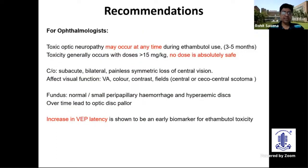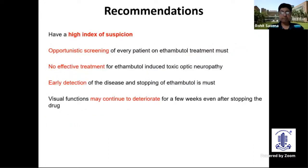What are our recommendations? Toxic optic neuropathy can occur anytime during ethambutol use, most commonly in the first three to five months. Although it's usually seen in higher doses, no dose is absolutely safe. It presents with subacute bilateral visual loss, but it could be asymmetrical. Fundus may more often be normal, but over time lead to disc pallor, and increased latency in the VEP is an early biomarker according to most studies. A very high index of suspicion is needed because the patient often does not think you need to know about his systemic problems or the treatment he is receiving, and almost everybody wants to hide tuberculosis. As an ophthalmologist, do opportunistic screening of every patient on ethambutol — there is no effective treatment and therefore early detection is very important. Also remember visual function may continue to deteriorate for a few weeks even after stopping the drug, up to a month.